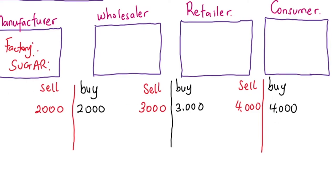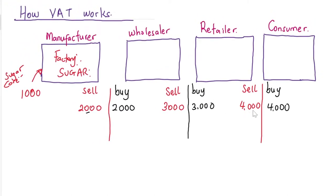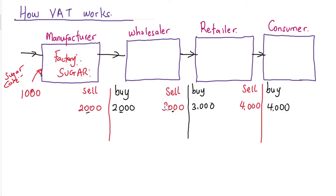This illustration shows the chain when there is no tax involved — no VAT. The manufacturer sells at two thousand, the wholesaler increases to three thousand and sells at a profit, then the retailer buys at three thousand and sells at four thousand. This is how things flow from the manufacturer down to the wholesaler to the retailer and to the consumer — that is the value chain. By the time the wholesaler buys at two thousand and sells at three thousand, they have made a profit of one thousand, recovering all costs and adding a margin.